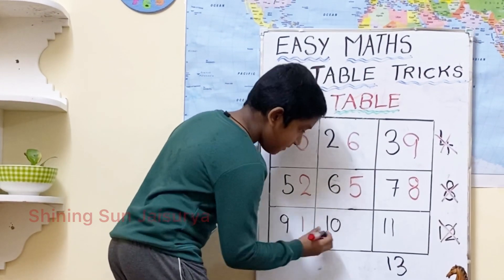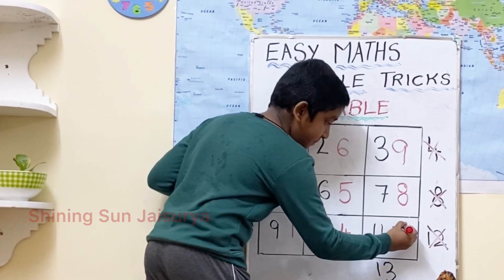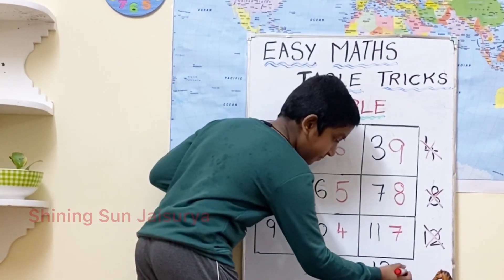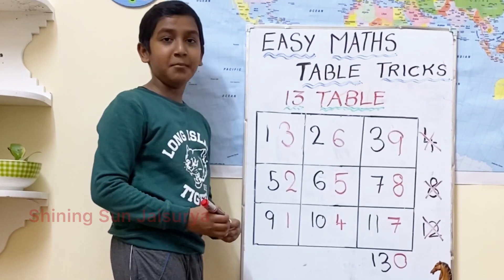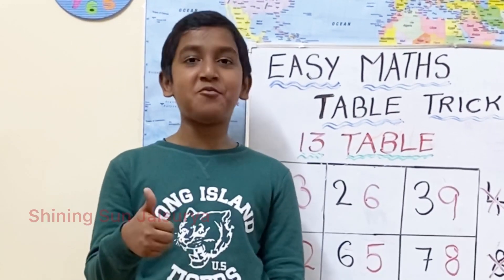1, 4, 7. And for 30, just write the 0. Here we got the answer for 13 tables. Please subscribe to our channel for more videos. Thanks for watching.